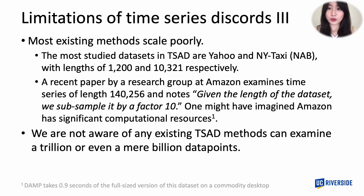Here's a more general problem. Most existing methods, including discord, have very poor scalability. The two most studied datasets for this problem are the Yahoo! dataset and the New York taxi dataset, both with mere thousands of data points. A team at Amazon, which is supposed to have a lot of computational resources, had to downsample on a small dataset of only 140,000 data points. More generally, we are not aware of existing methods that can address data with trillions, or even mere billions, in length.